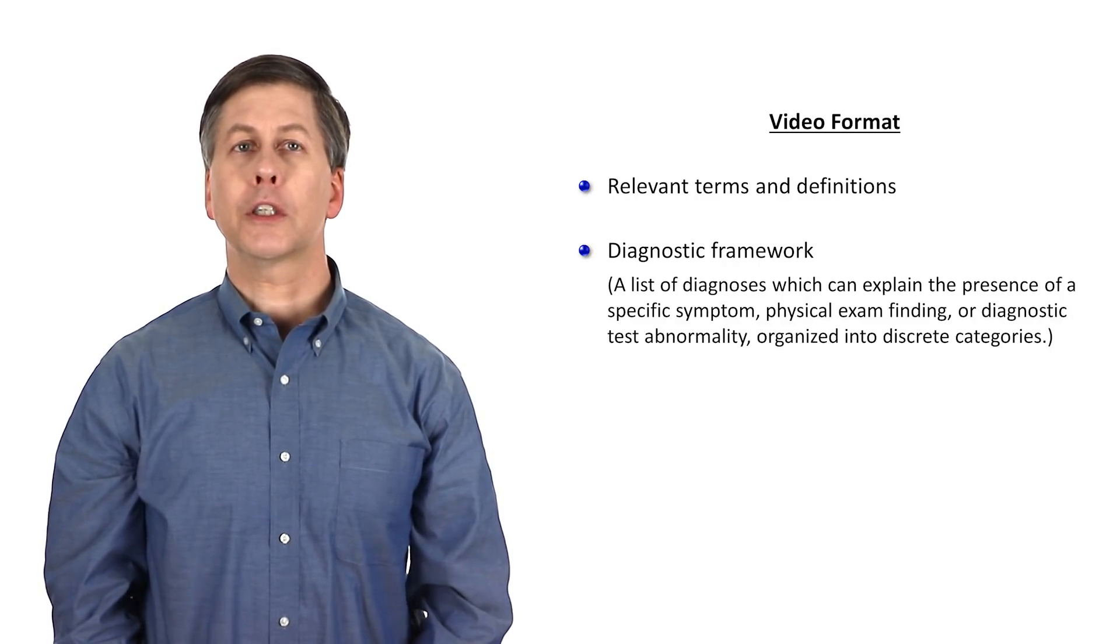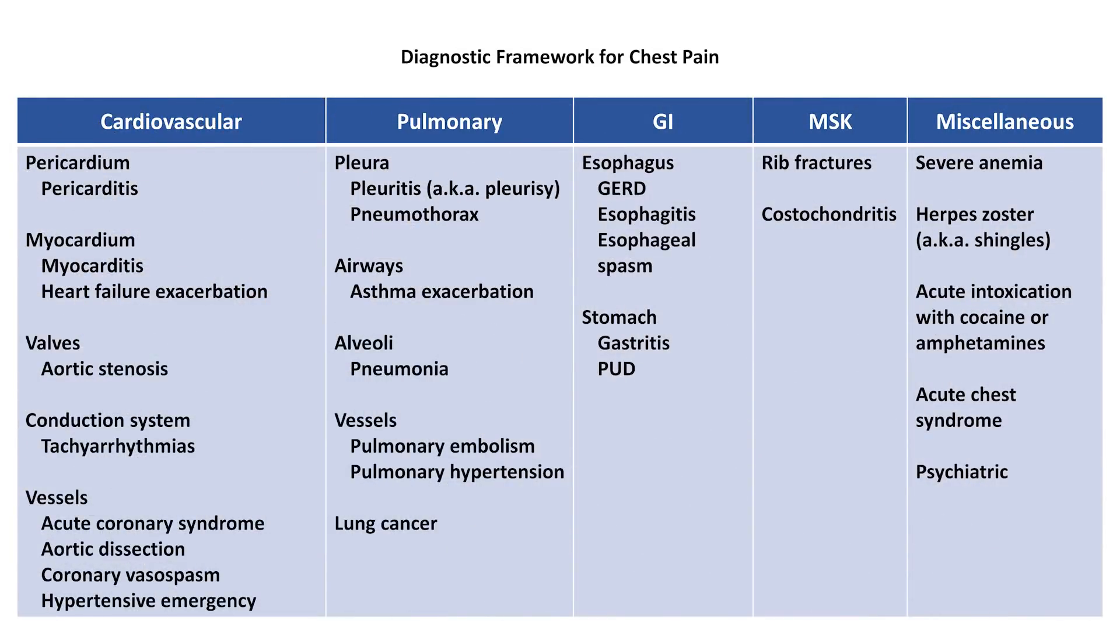Most commonly, diagnostic frameworks are based on organ system. For example, the causes of chest pain can be categorized into those which originate in the heart, versus the lungs, versus the GI tract.